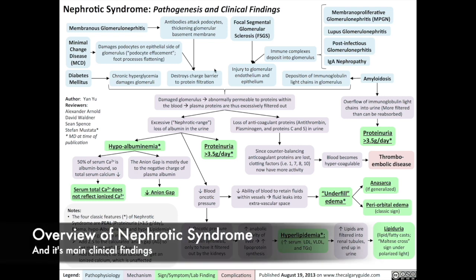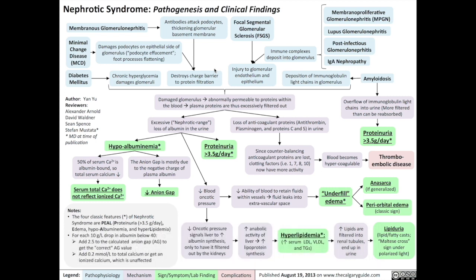Nephrotic syndrome is a condition involving damage to the epithelial side of the glomerular capillary wall, resulting in thicker glomerular basement membrane and loss of podocyte foot processes, both of which reduce the size and charge barrier to prevent protein filtration out of the bloodstream, leading to massive loss of proteins in the urine.